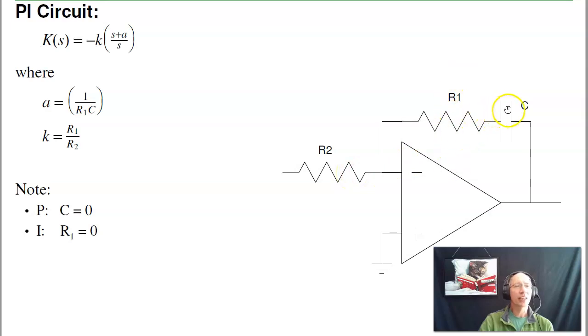A proportional gain is set C equal to 0, and the gain is just R1 over R2. An integrator is set R1 to 0, and the gain is 1 over RC.